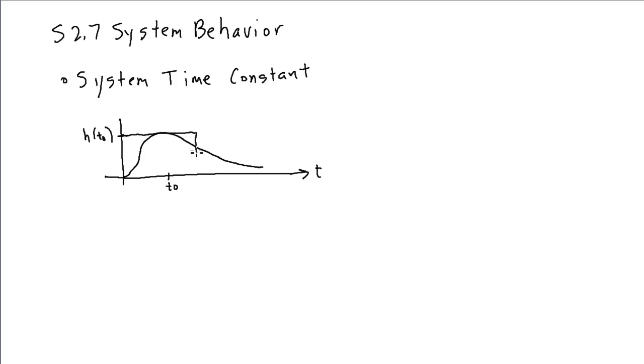and whose area is the same as the area under the original impulse response. So, this is the original h of t, and we're defining our system time constant, th, as defining the width of a pulse, of a rectangular pulse, that would give us the same area as the original impulse response.